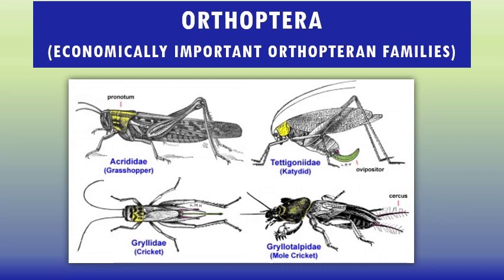The name Orthoptera means 'straight-winged' and refers to the thickened front wings, or tegmina. The front wings bear numerous veins and function more for protection than as an aid for flight. They are often pigmented for camouflage, and sometimes are broad and modified to resemble leaves. The hind wings are broader, folded like a fan, and though sometimes brightly colored, are often unpigmented. Even short wings are often involved in sound production.